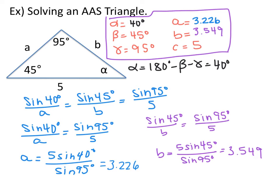When doing this, always use the given angle and given side, because that way you're not rounding. If you used sine of 40 degrees over 3.226, that's alright, but you're rounding, and then rounding again, so your answer will be slightly off. If possible, always use the given exact values.